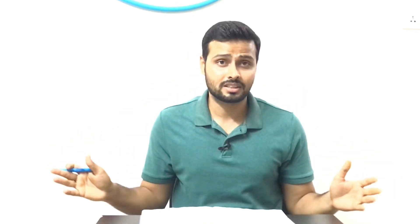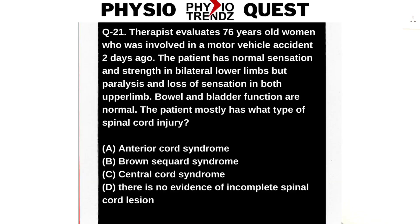The question asks: what type of spinal cord injury does this patient most likely have? This is a straightforward question if you know about the different types of spinal cord injury syndromes. The options given are: A) anterior cord syndrome, B) Brown-Séquard syndrome, C) central cord syndrome, and D) there is no evidence of an incomplete spinal cord lesion.